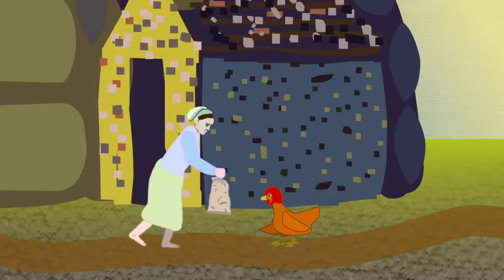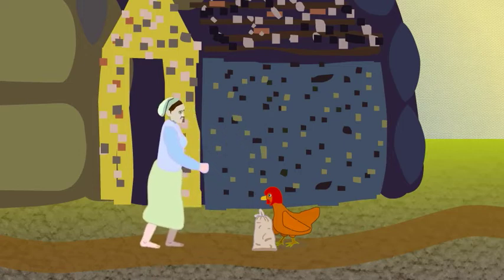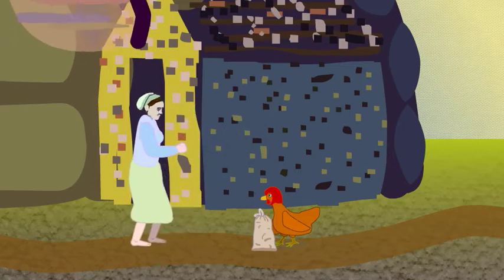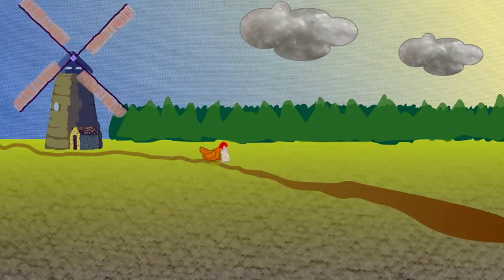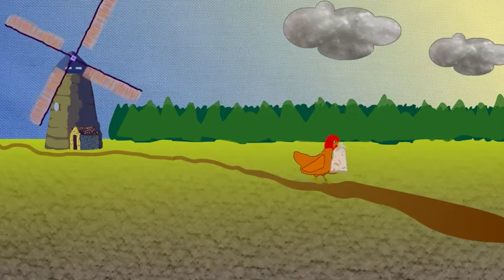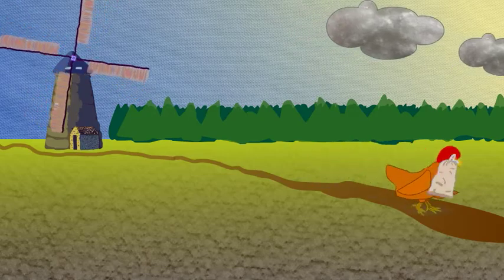Soon enough the miller returned with a small sack of flour and gave it to the little red hen. 'No charge,' said the miller. 'Thank you,' said the little red hen. She picked up the sack in her beak and walked back along the road to the farmhouse.